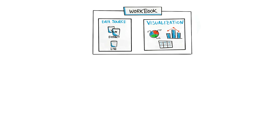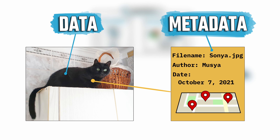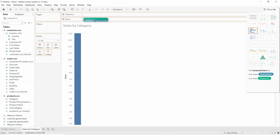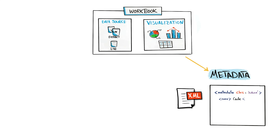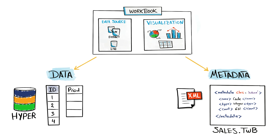Tableau uses two different types of data to store workbooks. The first is metadata, stored in XML files. Metadata is data about your data — it describes your data and contains all information about what you've done in the workbook. Anything you click, drag and drop, or do in Tableau Desktop is reflected in the metadata, such as column names, data types, and the data model. The second type is the actual data itself, stored in the Hyper file format using column store methods in memory for fast data retrieval.